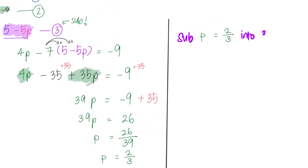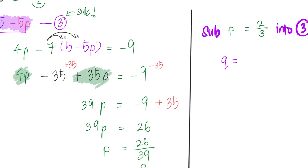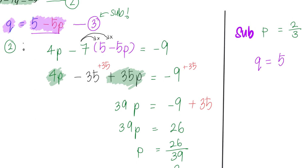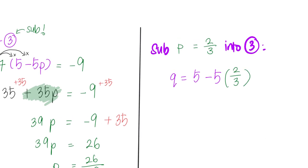into 3, which will be Q equals 5 minus 5P. But I don't write P anymore - I know my answer is 2 over 3. So this will give me 5 over 3, or you can write your answer as 1 and 2 over 3.